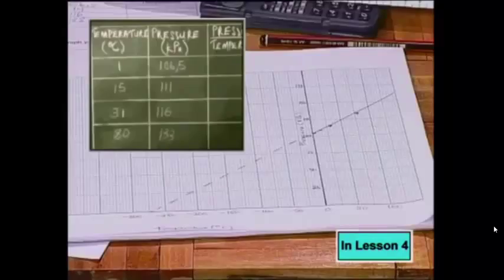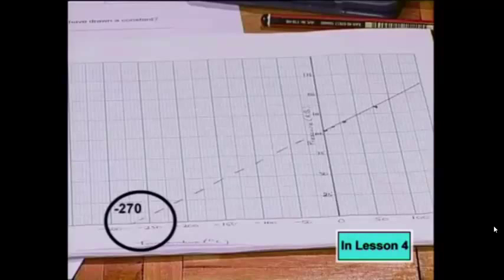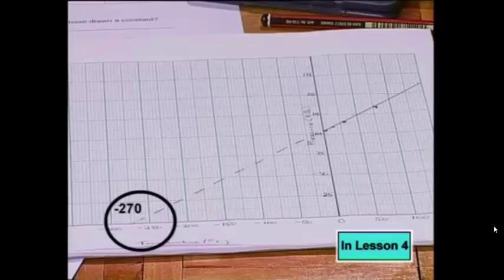This suggests that pressure is directly proportional to temperature, but their graph line didn't cut the origin, so the relationship between pressure and temperature for the units used can't be direct proportion. The learners extended their graph to find the temperature which would cause a pressure of zero, according to their data. They found this to be about 270 degrees Celsius.